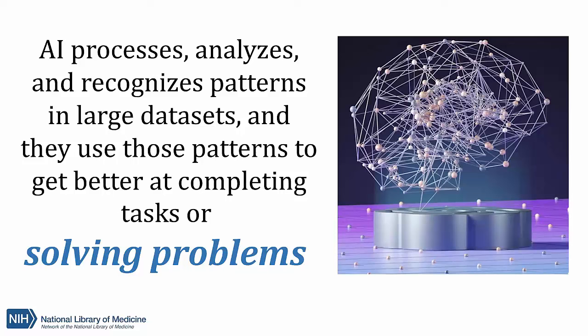AI really is an umbrella term — it covers a wide range of tools and functions. AI is often described as mimicking human intelligence. Humans can pick out what might be sensitive information; we can differentiate between a date of birth or an address from otherwise random strings of text and numbers. We like the definition from the NNLM data glossary, which discusses how AI processes, analyzes, and recognizes patterns in large datasets, and uses those patterns to get better at completing tasks or solving problems.